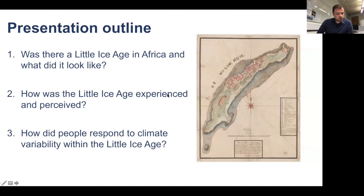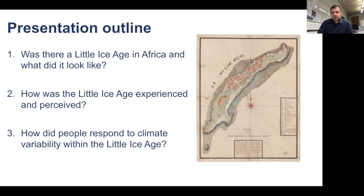What I want to do in this talk is focus on three questions and three areas, and I'll try to keep these during the talk and come back to them at the end. Firstly, I want to question whether there was a Little Ice Age in Africa and what it looked like — you're going to see a few wiggly lines here. Secondly, I want to look at how the Little Ice Age was experienced and perceived, largely through the lens of colonial records, which has its own problems that I'll be touching on.